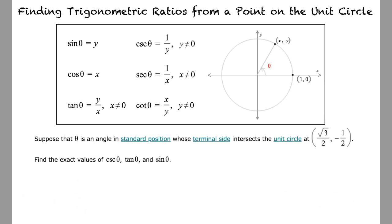Sure. Suppose that theta is an angle in standard position whose terminal side intersects the unit circle at (√3/2, -1/2). Find the exact values of cosecant of theta, tangent of theta, and sine of theta. Start by finding the cosecant — substitute the y-coordinate into the identity 1 over y, to yield 1 over negative one-half. Simplifying this results in negative 2.